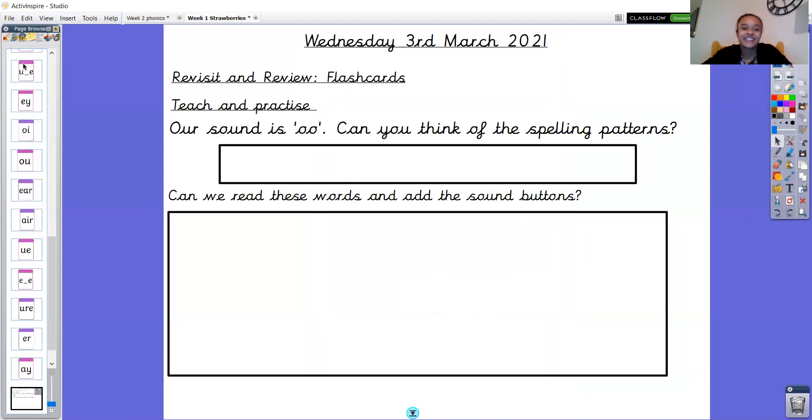Brilliant, well done. Okay, so as you probably guessed we're thinking about U, OO and OO today. So we know that double O makes the OO or the OO sound and there's some other spelling patterns that can make the U or the OO sound. I wonder if you can think of them, have a little pause the video, see if you can write them down and then come back to me when you're done.